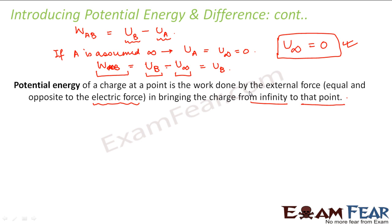If you compare the two, potential energy difference is more significant. When we talk about work done, we don't talk about potential at each point — we just talk about the difference in potential energy of the two points. In practical applications, it is potential energy difference which is of more significance compared to potential energy. We will now move forward and concentrate on electrostatic potential.